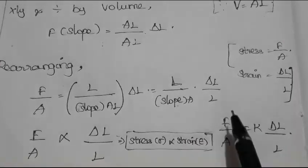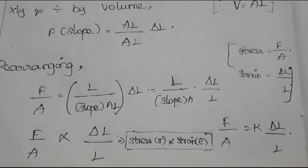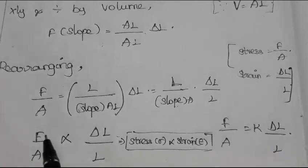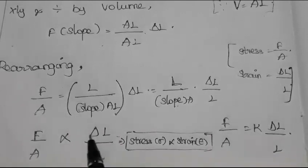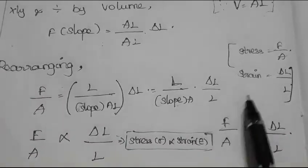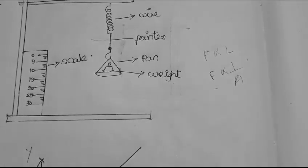So this gives us stress proportional to strain. F by A is stress, denoted sigma, and del L by L is strain, denoted epsilon. Therefore, stress is proportional to strain within the elastic limit. This is the experimental verification of Hooke's Law. With the help of this experiment, we have proved that stress is proportional to strain.